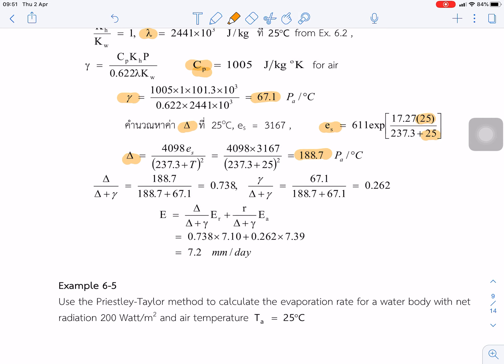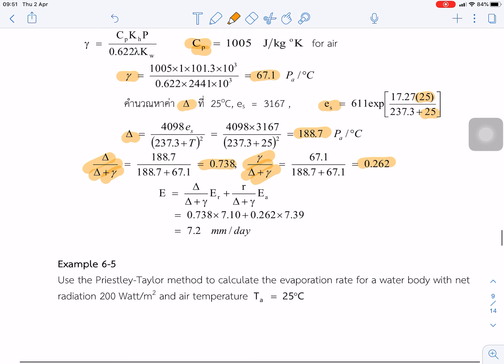So next, we find the weighting factors. The first weighting factor is 0.738. This one is 0.262. And we substitute in the equation of the combination. So we got the evaporation using the combination method. It's about 7.2 mm per day.